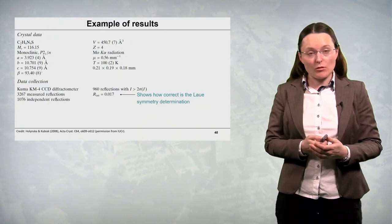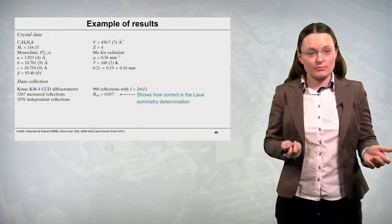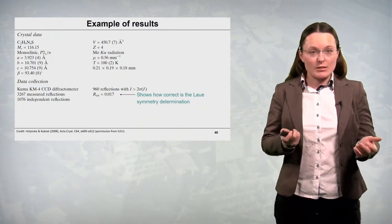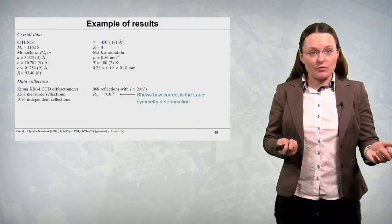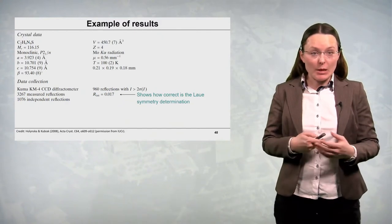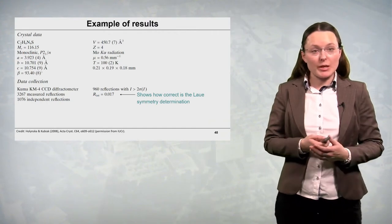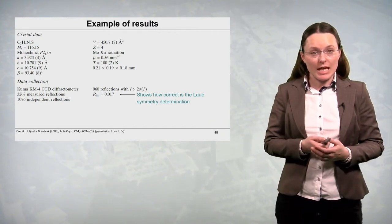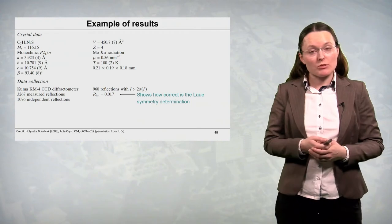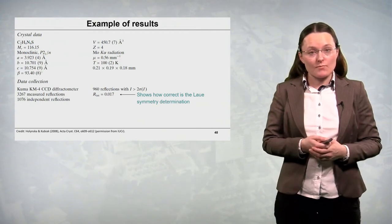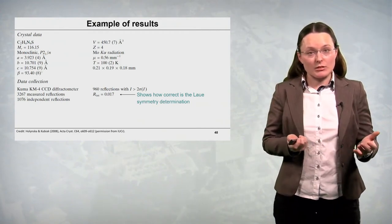This is followed by some data collection parameters. So first we have the type of diffractometer, the number of measured reflections, the number of symmetry independent reflections, the number of reflections with intensities which are greater than certain threshold.